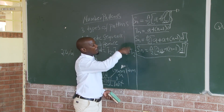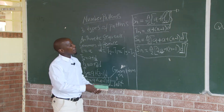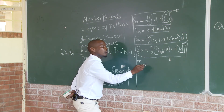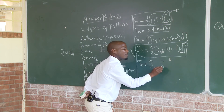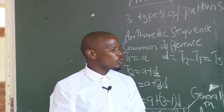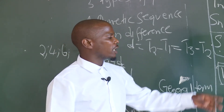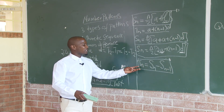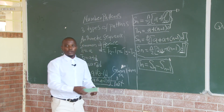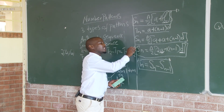If you want to prove the formula, you can use the method. The formula for Tn is equal to the sum of n terms minus the sum of n minus 1 terms. If you want to find a specific term, like T5, you use the sum of n minus the sum of n minus 1. Remember, this formula is examinable.